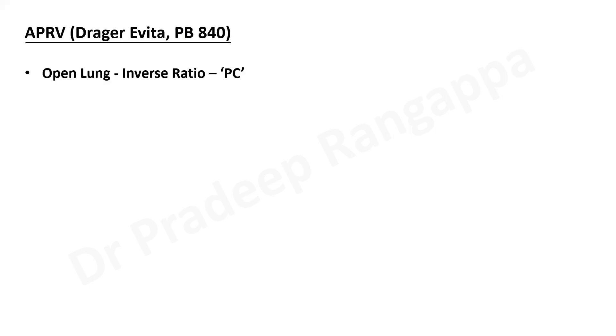APRV is present in a few commercially available ventilators like Dragger Evita and Puritan Bennett 840. In our ICU we have Dräger, so we do have the APRV mode and we have tried it in a couple of patients. In essence, APRV is providing differential CPAP at a high level and at a very low level. It is a little similar to BiPAP but there are certain differences.